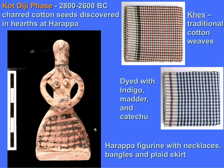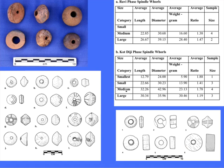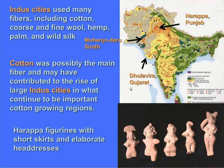By the Kot Diji phase, we have clear evidence of woven textiles with multiple colors. A skirt worn by a figurine reminds me of the traditional checked or plaid skirts called khas being made in Pakistan today, woven with hand-spun cotton and dyed with indigo, madder, or katechu from the acacia tree — a brown color. During the Kot Diji phase, we see about four different varieties of spindle whorls, indicating spinning of a larger array of fiber thicknesses and suggesting a more complex textile industry is developing.